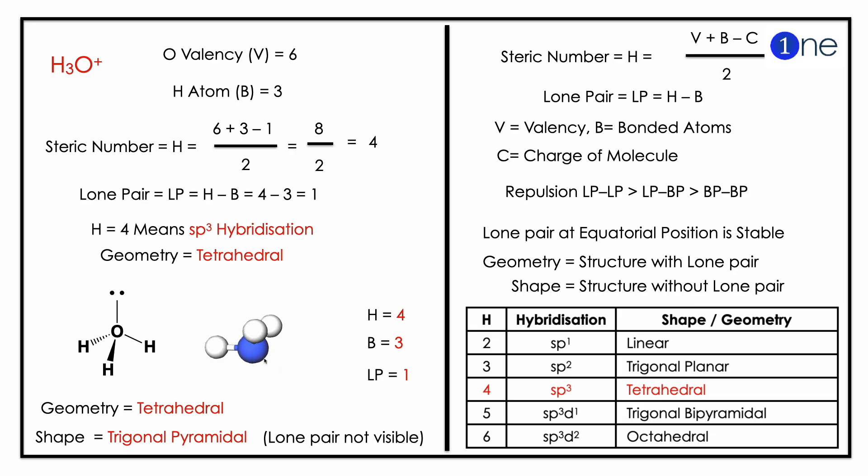H equals 4 means you have geometry of tetrahedral. But if you calculate the lone pair, H minus B, which equals 1.